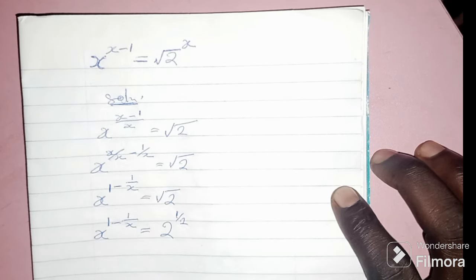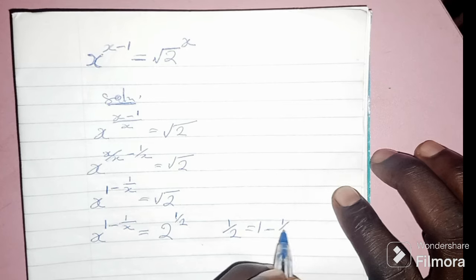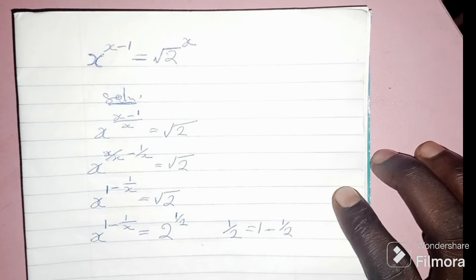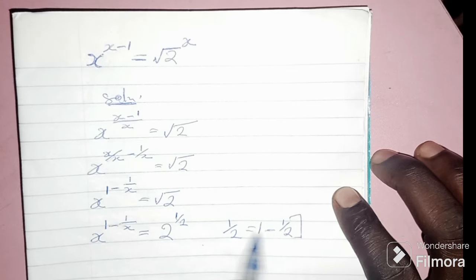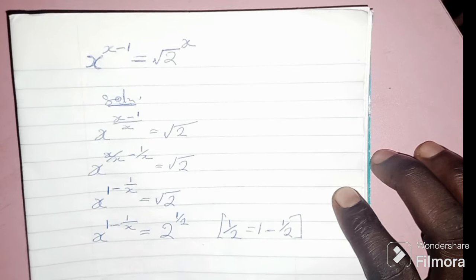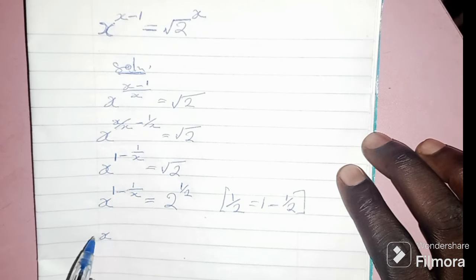Now, 1 over 2 can be written as 1 minus 1 divided by 2, because 1 minus one half equals one half. So this 1 divided by 2 is the same thing as 1 minus 1 divided by 2.